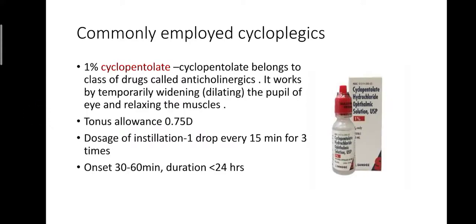Cyclopentolate 1% belongs to a class of drugs called anticholinergics, which block the action of acetylcholine — the neurotransmitter of the parasympathetic nervous system. This results in dilation of the pupil along with paralysis of the ciliary muscle. The tonus allowance is 0.75 diopters. Dosage is one drop every 15 minutes for three times; onset is 30 to 60 minutes and duration is more than 24 hours.